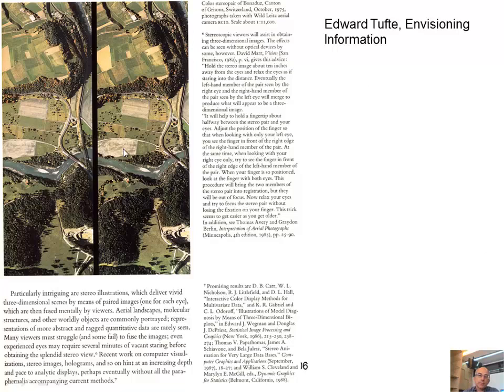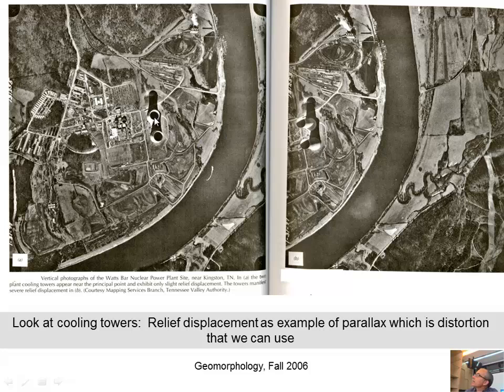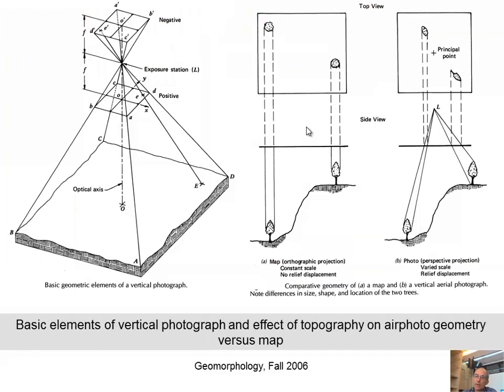Modern aerial photography can be stereo color. Because the picture is taken from two different positions of the same target — just like our eyes — we can see depth. The parallax, which is the displacement of features in the image, is a function of their height. Here's an example: these cooling towers were photographed first from the left, so they appear to lean right, then from the right, so they appear to lean left. That's parallax, and your brain can process it to get 3D. You need to put one image in one eye and the other image in the other eye, and your brain does the combination.